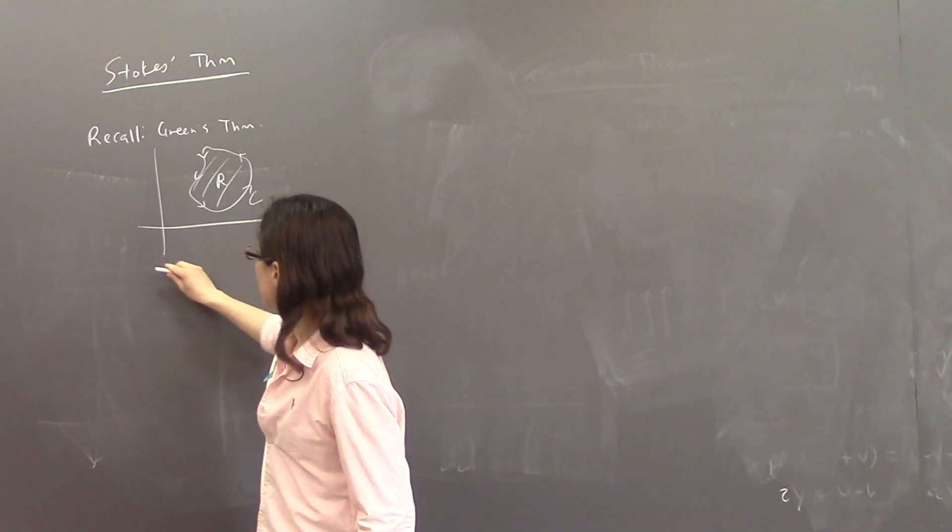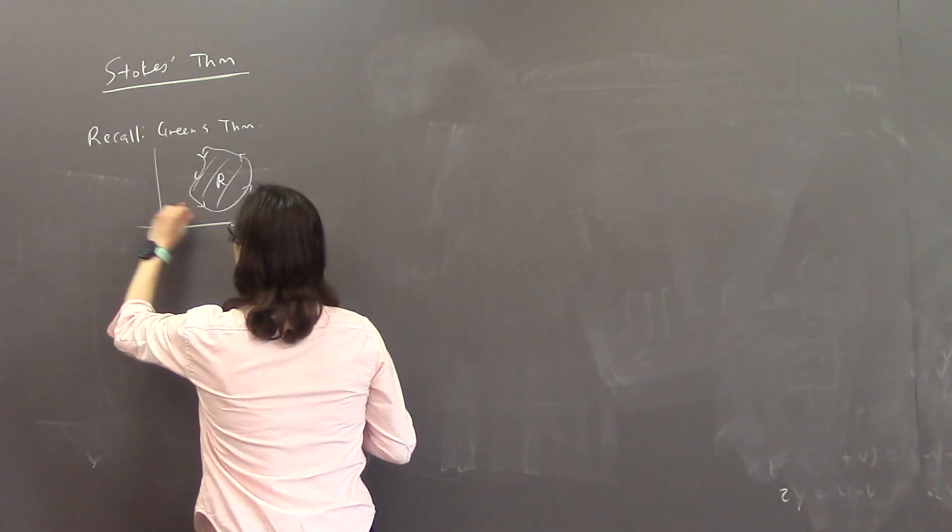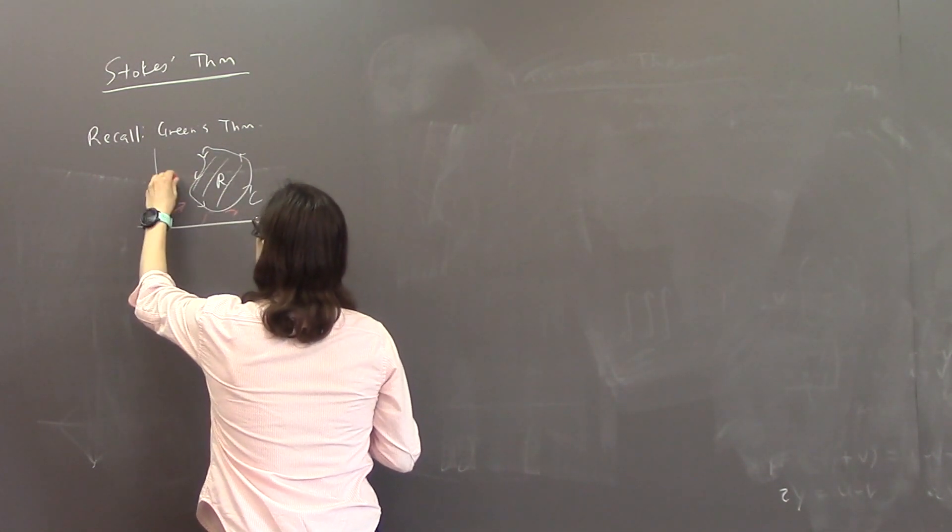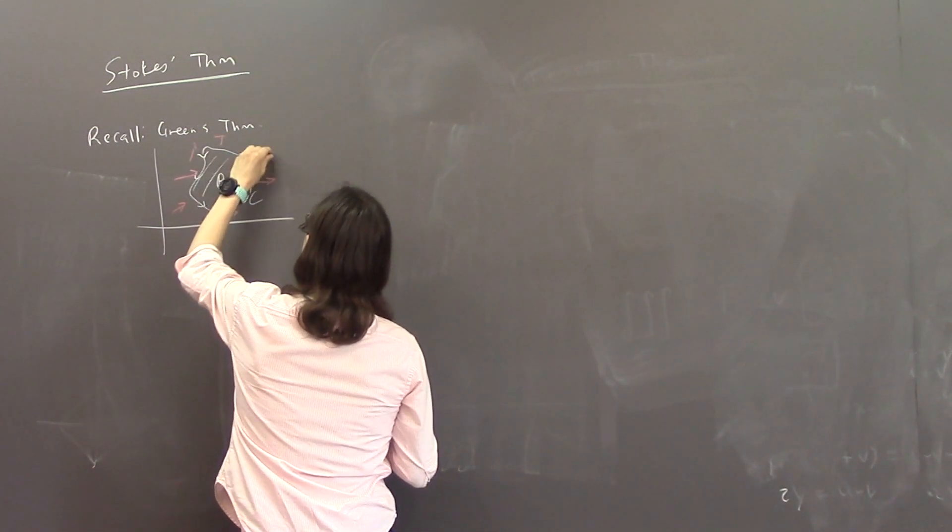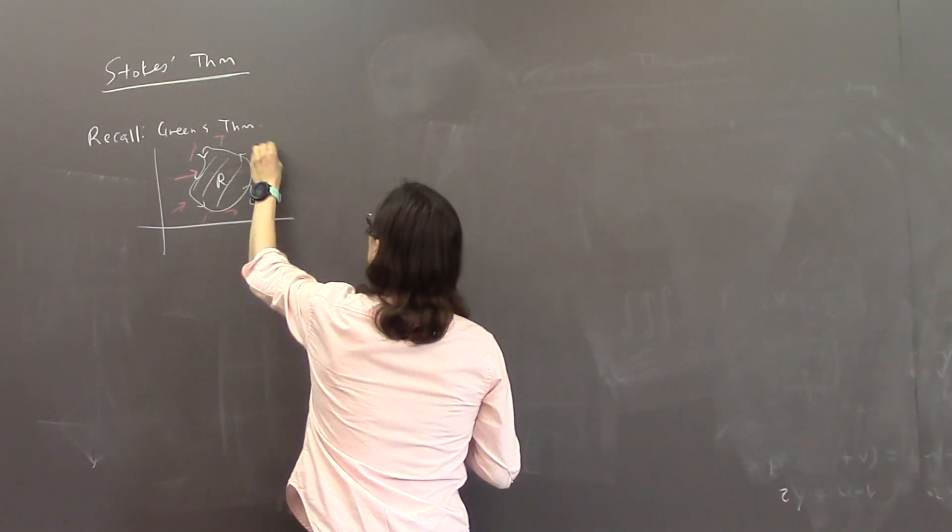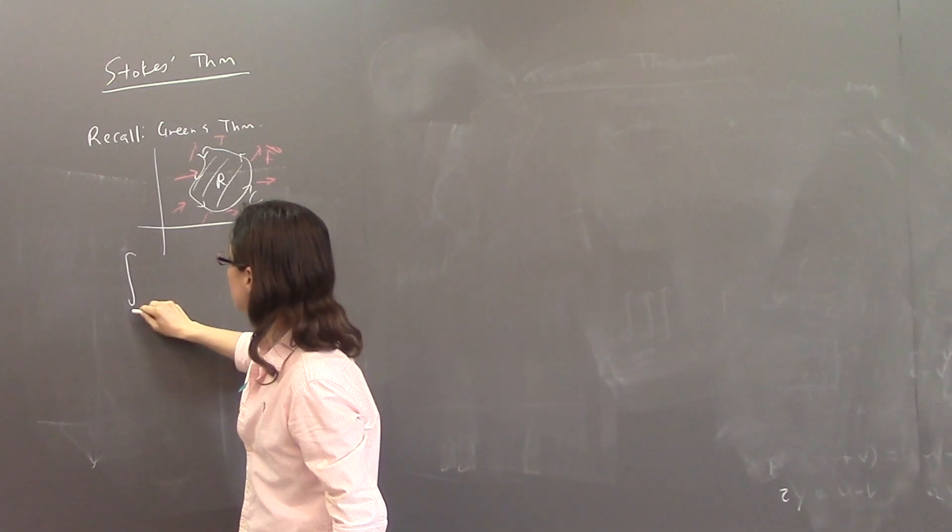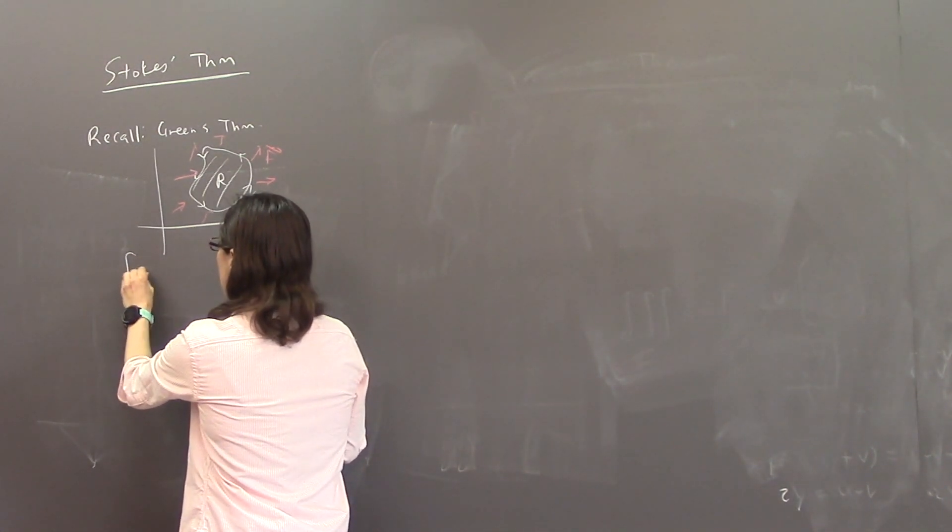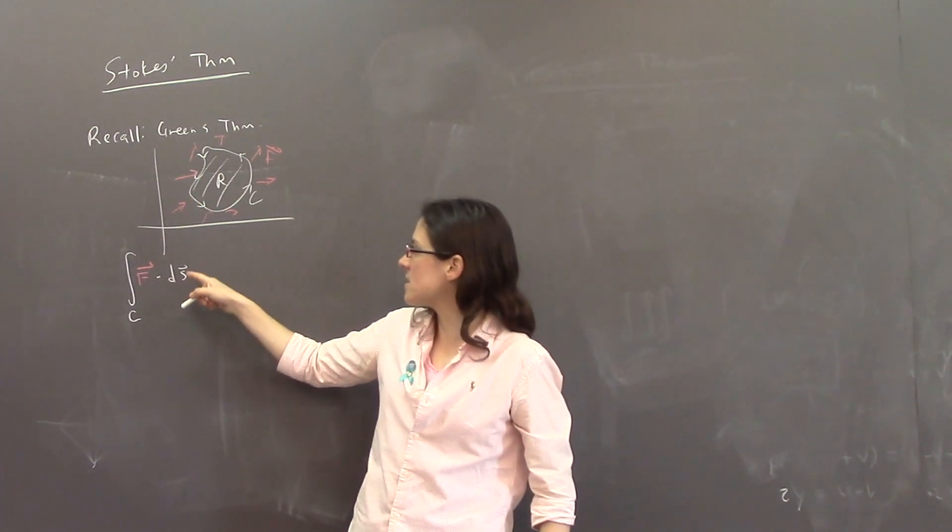Then you have some vector field F that's like flowing around and flowing along here, great, there's F, then it tells you that if you want the vector line integral over C of F dot dS.